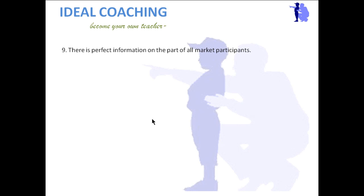The next assumption is that there is perfect information on the part of all market participants. This is also part of perfect competition, where buyers and sellers know everything about their counterparts — buyers should have full knowledge about all products and technologies when they go to purchase anything.